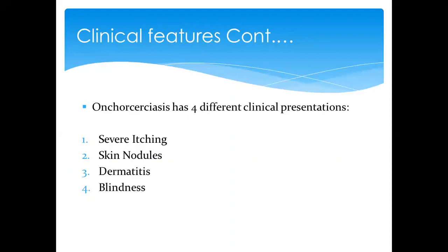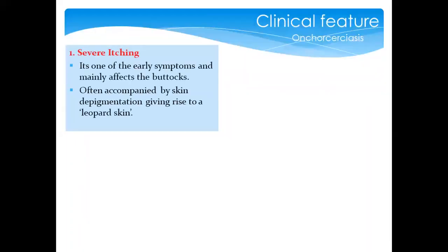There are four classical clinical presentations. First, severe itching due to irritation on the skin. Second, skin nodules formed by the adult worms. Third, dermatitis — inflammation of the skin. Fourth, blindness, which occurs as a complication when the worms migrate to the eye. The severe itching is normally the early symptom.